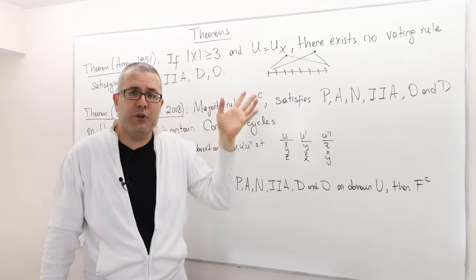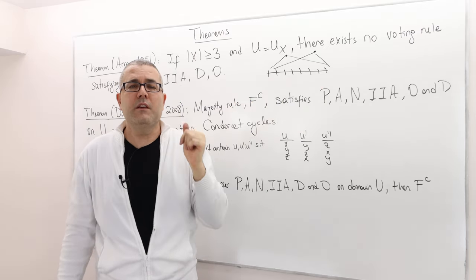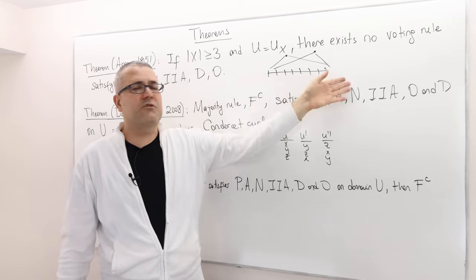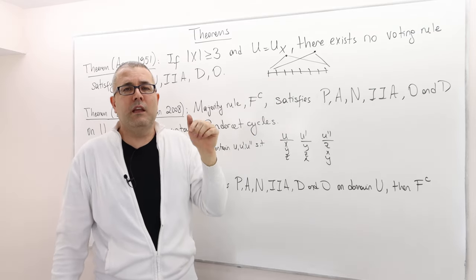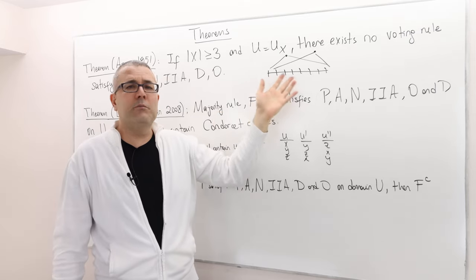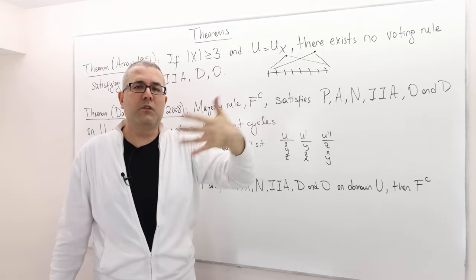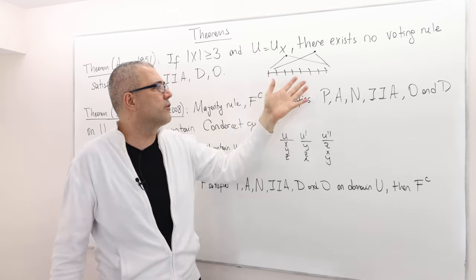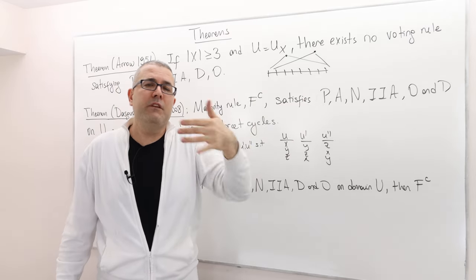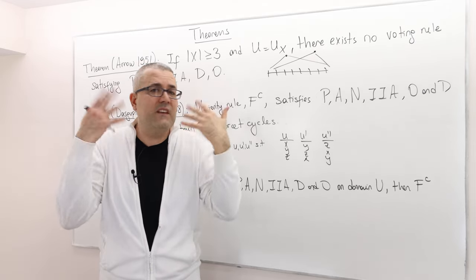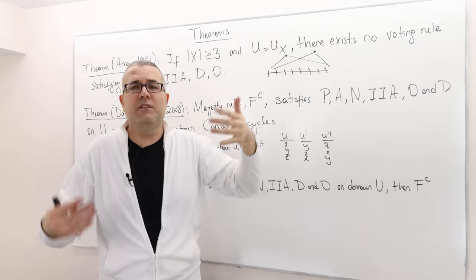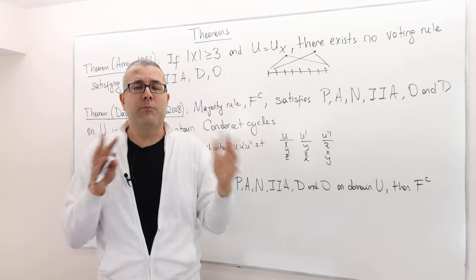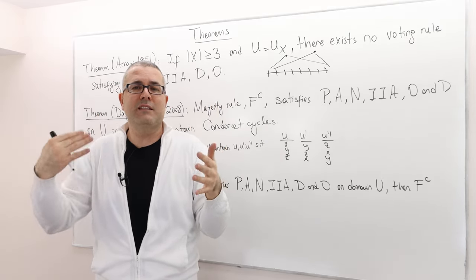This is actually a pretty reasonable domain of preferences because if you think of this as like a political spectrum from extreme left to extreme right, this is like a Hotelling problem. Political parties locate themselves on this political spectrum, assuming it is one dimensional. Then every voter would like to vote for the party who thinks exactly like himself, and that would be his or her first best.